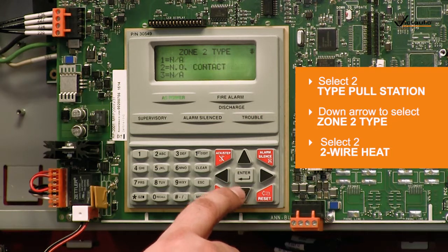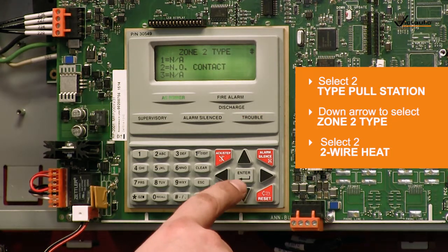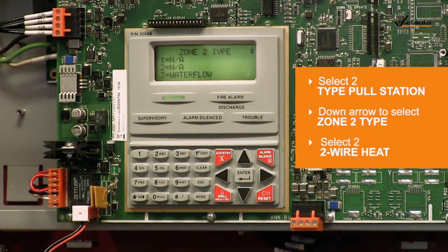Use the down arrow key to cycle through options. For this example, select 2 for two-wire heat on the fifth screen down.